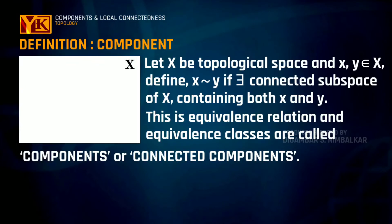If x is a topological space, then if we define a relation by taking x equivalent to y, if there exists a connected subspace of x containing both x and y, then this is equivalence relation and the equivalence classes are called as components or connected components of space x.